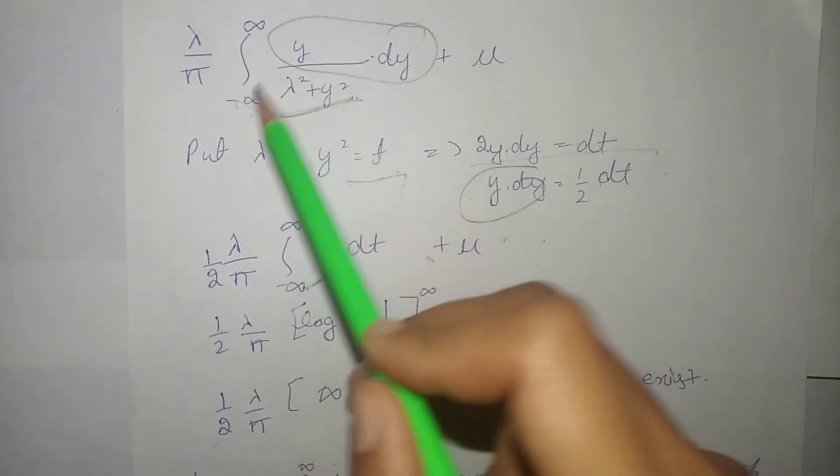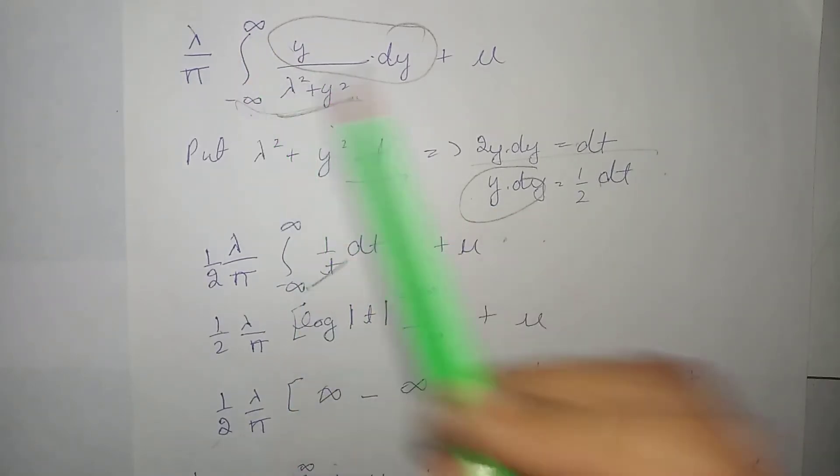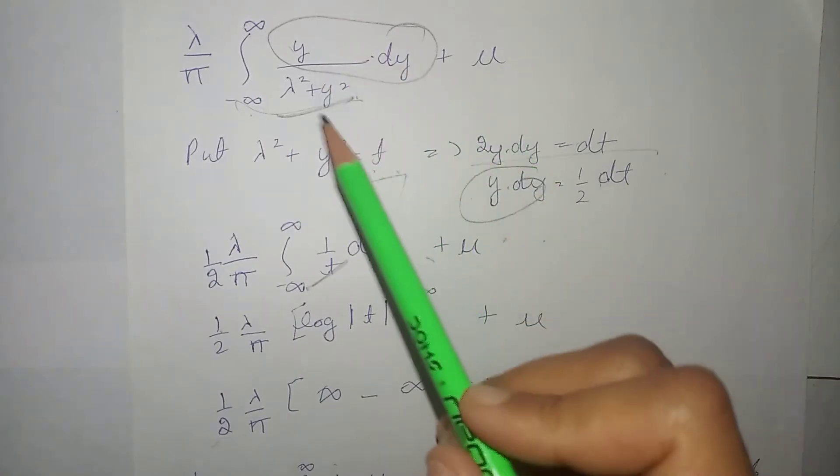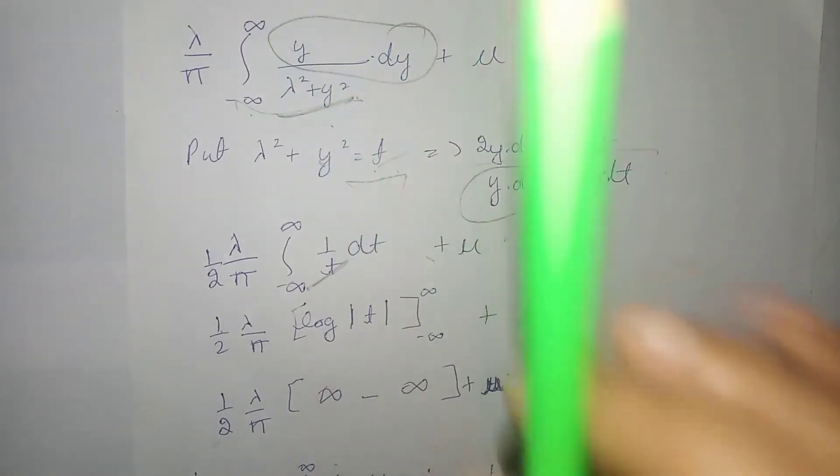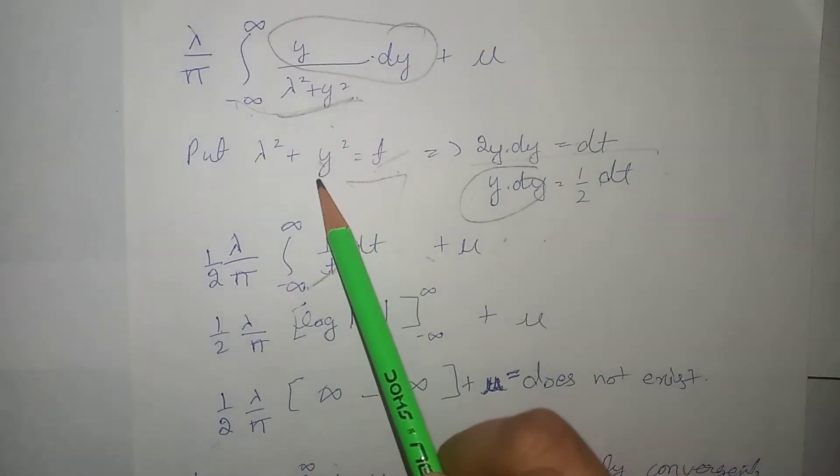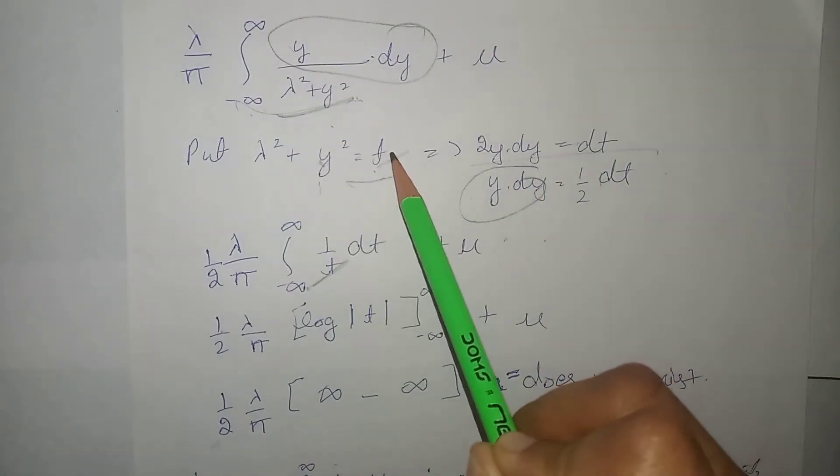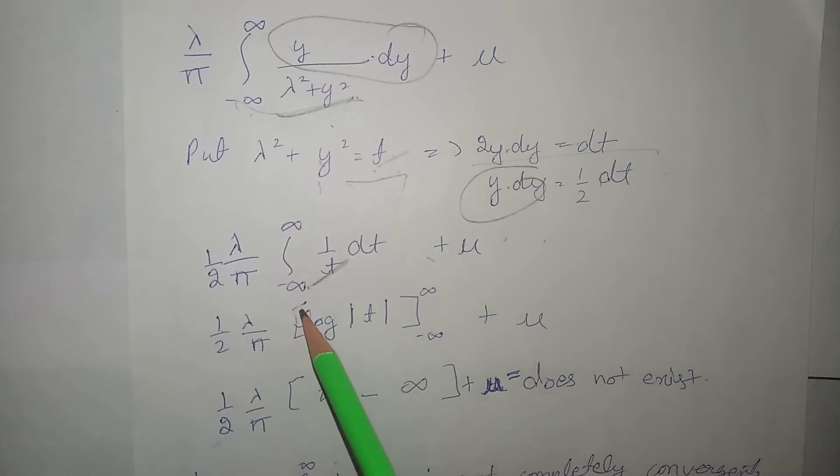Ab, vaise limits ye hai, toh, y ke liye, ab, humne limits nikali nikali hai. T ke liye, so obviously, jab aap y ki jaghah per infinity put kar denge, t ki value infinity aajayegi. Next, jab y ki value minus infinity put kar denge, t ki value again minus infinity aajayegi. That is, limits aapki same hi rahengi.